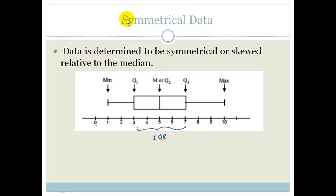Now, let's talk about symmetrical data. If the data is determined to be symmetrical or skewed, it's always relative to the median. And this is very symmetrical because it's equally distant. Q1 and Q3 are equally distant from the median. So, we say that this data is symmetrical.